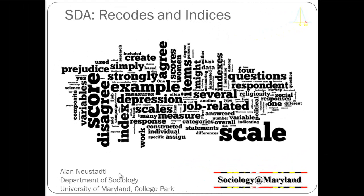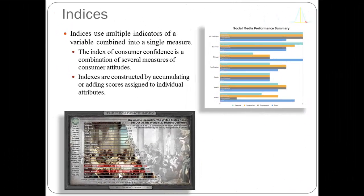In this video we're going to discuss what an index is and then how to create one in SDA using an example based on people's attitudes about abortion. In sociological research in the quantitative world we tend to think of things — we often create indices or scales and people use these terms interchangeably. I'll almost guarantee that by the end of this video I'll have used the word scale, but really what we're going to create is an index, not a scale.